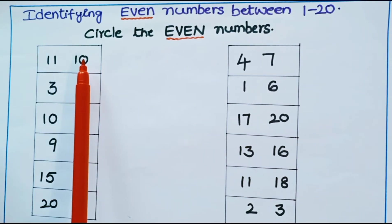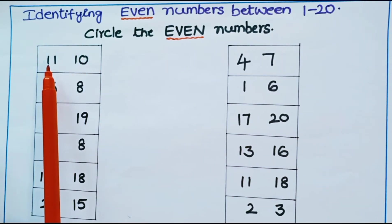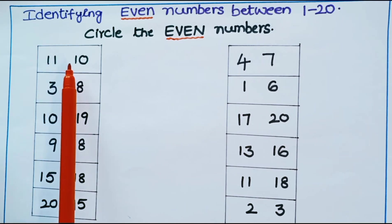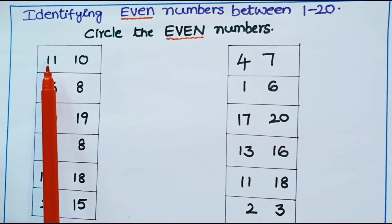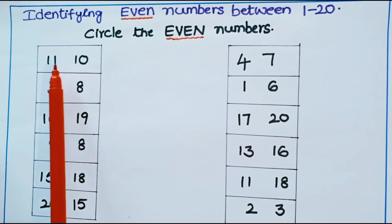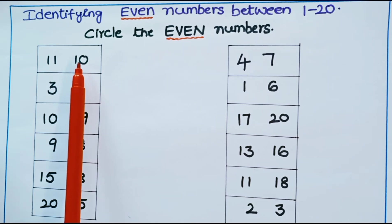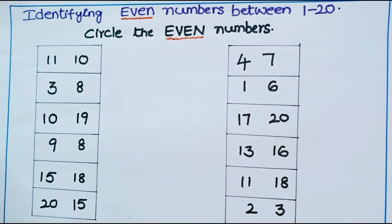Look at the first row. The numbers given are 11 and 10. What is the even number in these two? It is 10. Even numbers end with 0, 2, 4, 6, or 8.